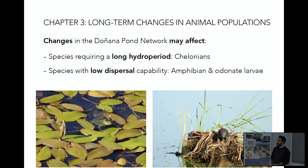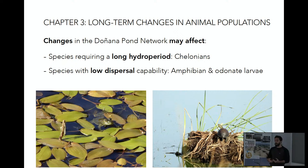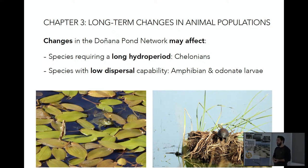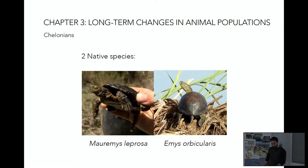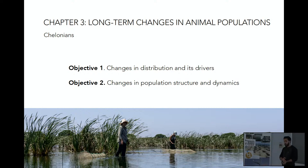Moving to the third chapter of my PhD, which is the first one regarding animal communities. We know that two main groups of animals could suffer from declines in the Doñana pond network: those that need longer hydroperiods, because with this reduction they won't have their niche; and species that, even if they don't need longer hydroperiods, have low dispersal capability — this would be the case of amphibians and dragonfly larvae. For aquatic turtles, we have two native species in Spain and in Doñana, and we want to address two main objectives: the changes in their distribution in Doñana and the drivers of these changes, and changes in population structure and dynamics.